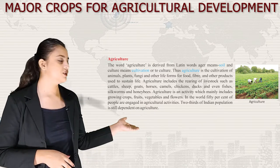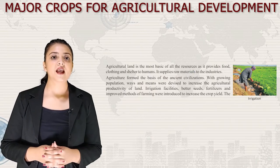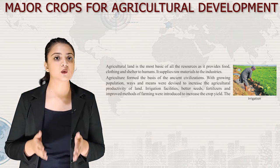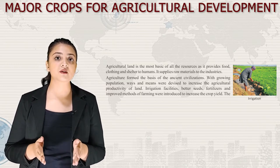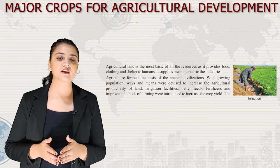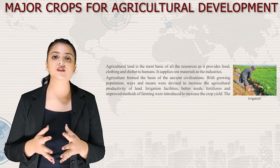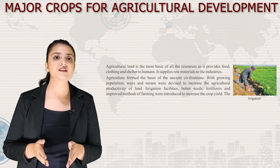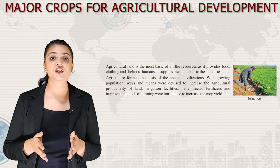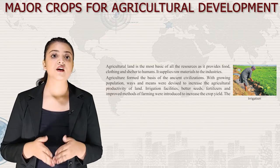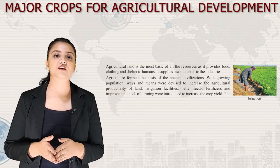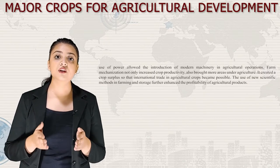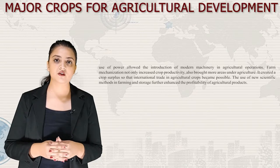Here is an image of agriculture and irrigation. Agricultural land is the most basic of all resources as it provides food, clothing and shelter to humans. It supplies raw material to the industries. Agriculture formed the basis of ancient civilizations. With growing population, ways and means were devised to increase agricultural productivity. Irrigation facilities, better seeds, fertilizers and improved methods of farming were introduced to increase crop yield.